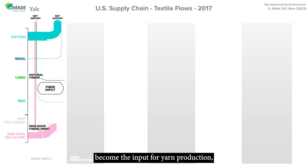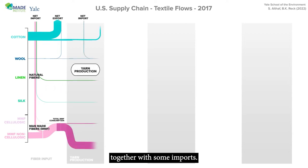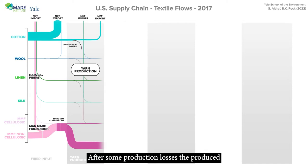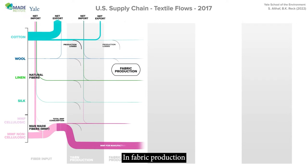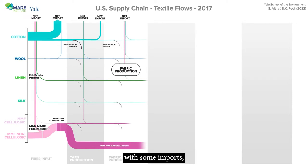The produced fibers become the input for yarn production, together with some imports. After some production losses, the produced yarn is mostly used for domestic fabric production, with the exception of cotton, which is mostly exported. In fabric production, the produced yarns, together with some imports, are converted to fabrics, with some of them being exported.